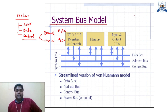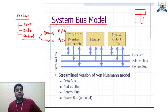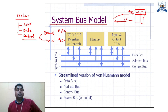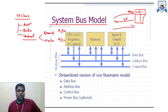For example, suppose we have a memory location at address 2000 containing data 25. First, the address bus carries the address 2000 so the microprocessor can access that location. Then, the data 25 is read or written by the microprocessor via the data bus. The control bus carries the information about whether it is a read or write operation — memory read, memory write, I/O read, or I/O write. This is the system bus model for the microprocessor.